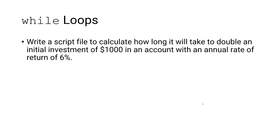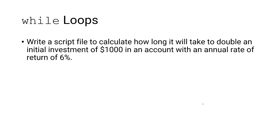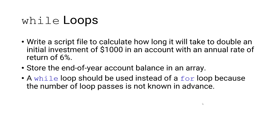In this video, we're going to write a script file to calculate how long it will take to double an initial investment of $1,000 in an account with an annual rate of return of 6%, and we're going to store the end-of-year account balance inside of an array. We know to use a while loop instead of a for loop because the number of loop passes is not known in advance — we don't know how many years it will take to double our initial investment.